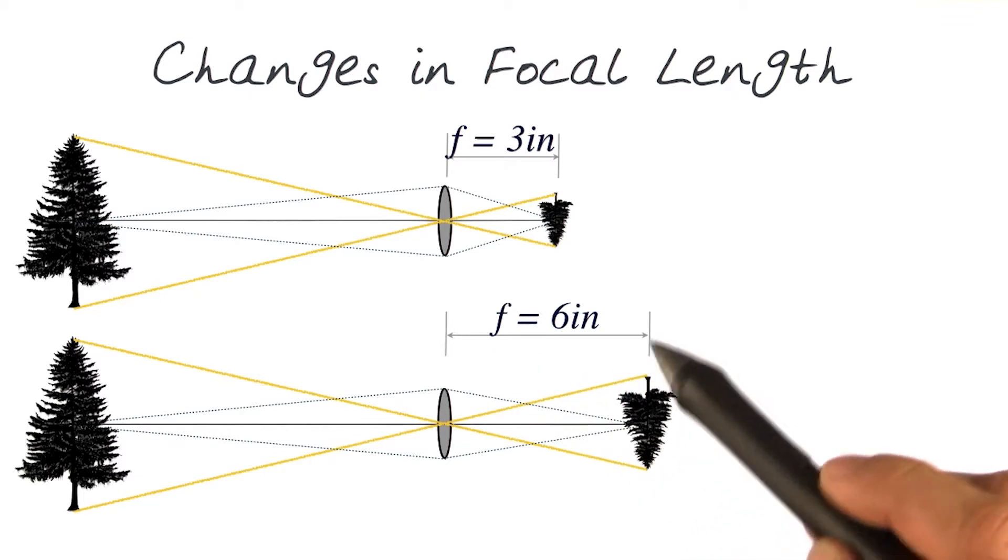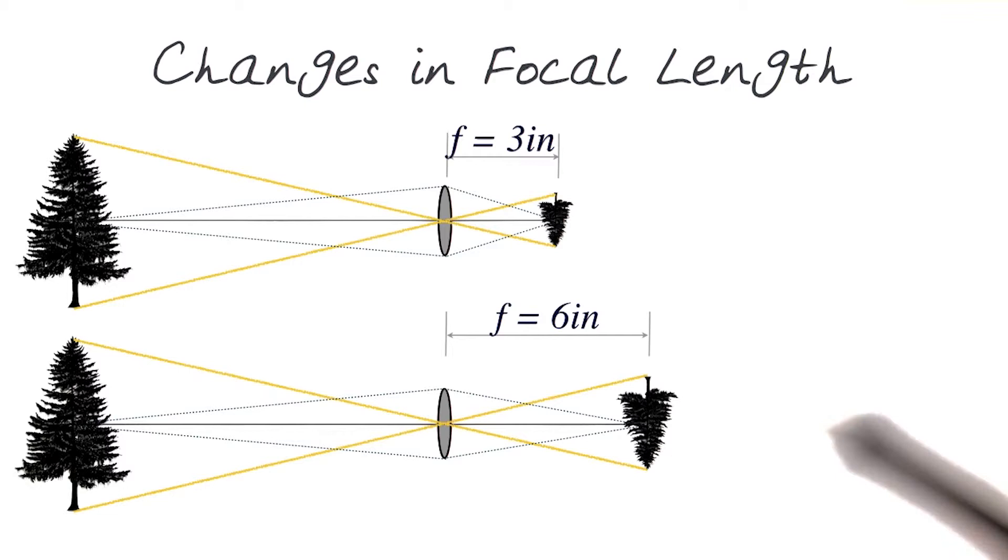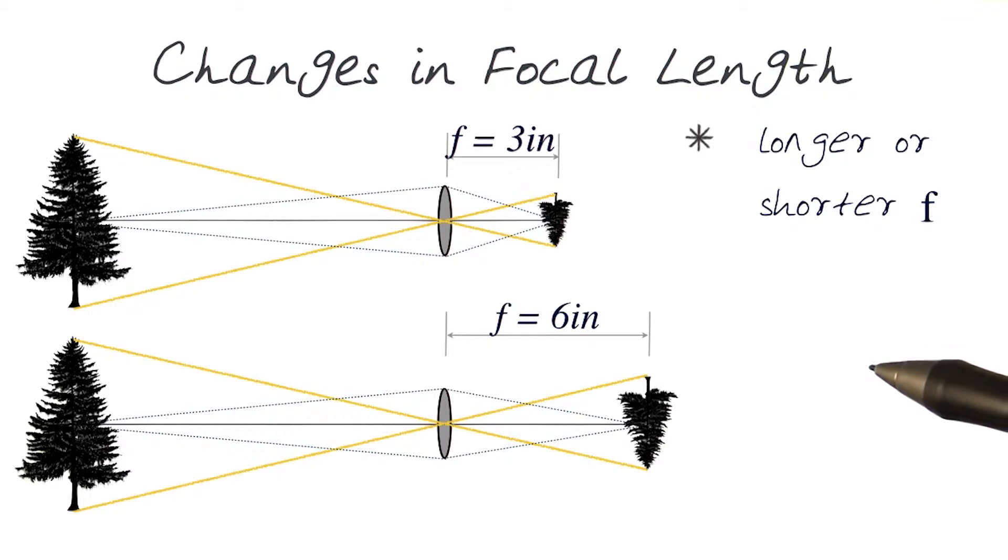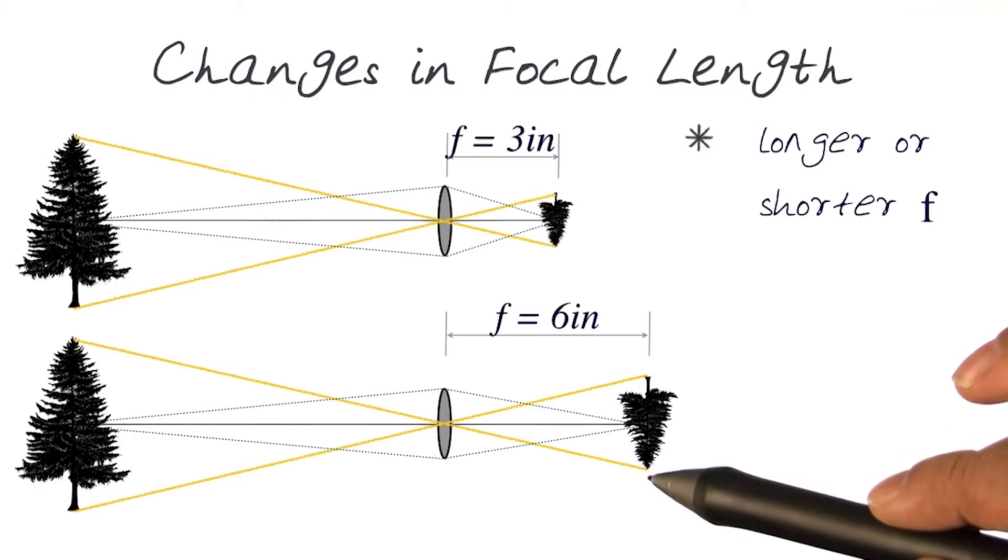So just by changing the lens focal length, we notice that the image formed is much bigger. This allows us to control how we form images on our sensor. By changing the focal length, we can play around and generate different types of images.